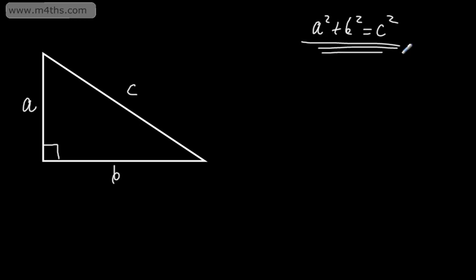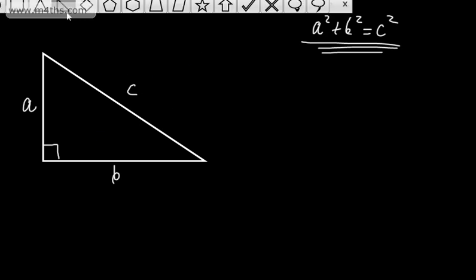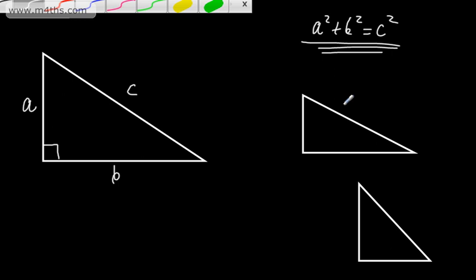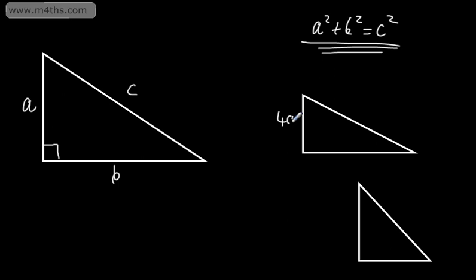So all we have now are the two shorter sides - we square each of them, we add them together, and that gives us the hypotenuse squared. Let's look at a couple of basic examples. I'll draw some triangles and we will look at finding some missing lengths. This one is going to be 4cm and this one is going to be 6cm. We might be asked to find the value of X.